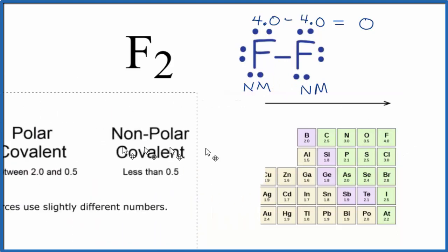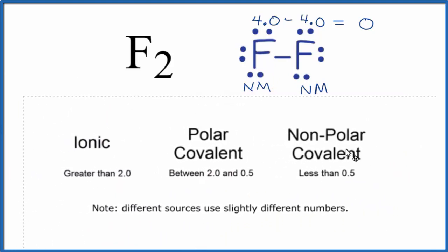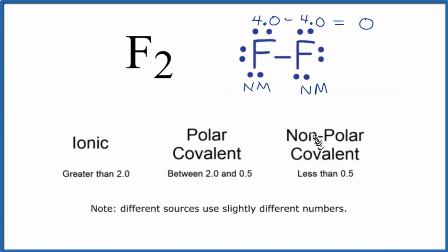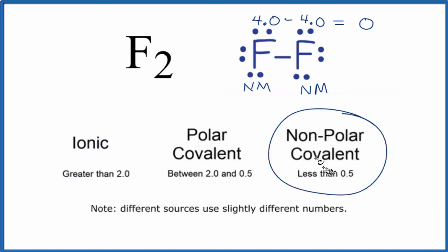We can think about bonding as a continuum. We have ionic on one side and nonpolar covalent on the other, and we look at the difference in electronegativity. For nonpolar covalent, the difference in electronegativity is less than 0.5. Fluorine's difference is less than 0.5, so it is nonpolar covalent.